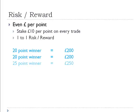The third trade is a 25-point winner — the stop is a little bit wider on that trade. But we're still doing £10 a point, so instead of risking £200, I'm now risking £250 on the trade. The trade's a winner, so I'm happy with that. After three trades I'm up £650.